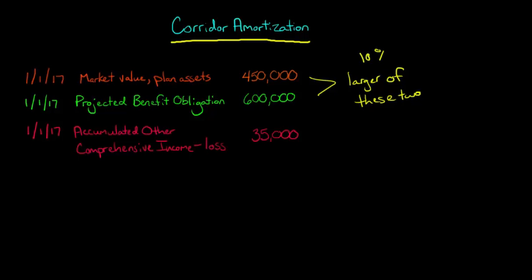We see that $600,000 is more than $450,000, so we're going to take 10% times $600,000, and that's going to give us $60,000.